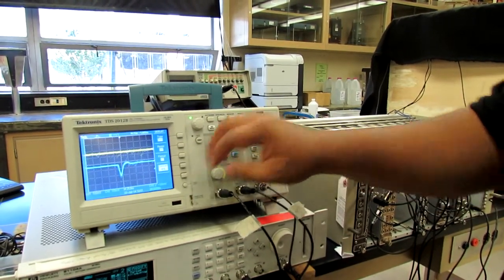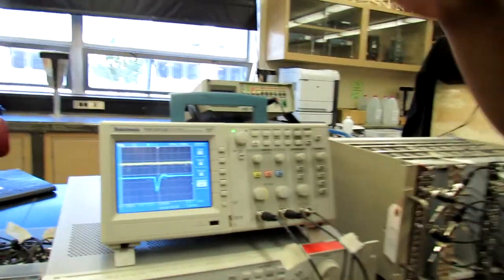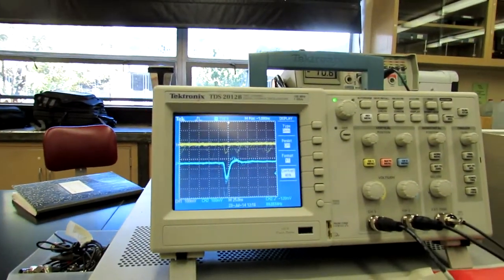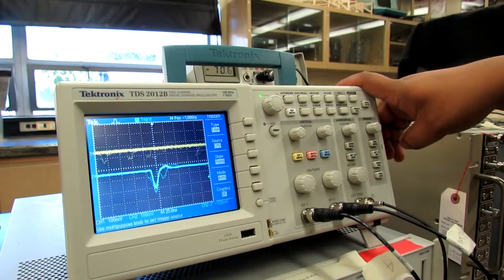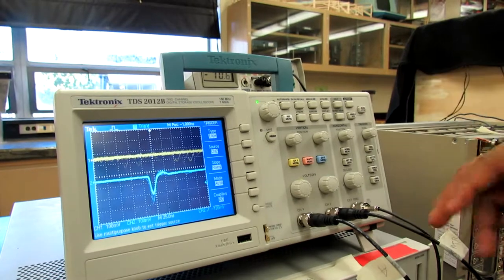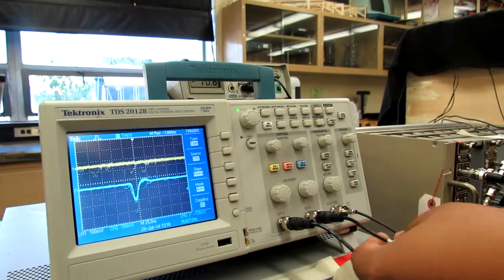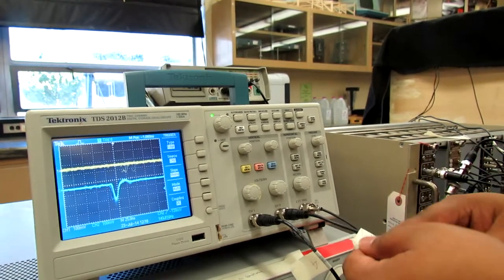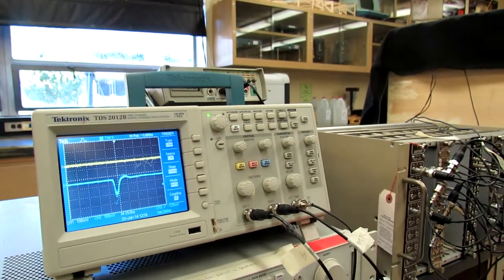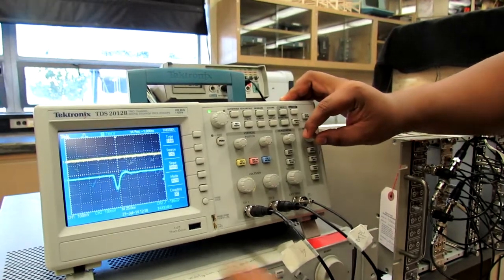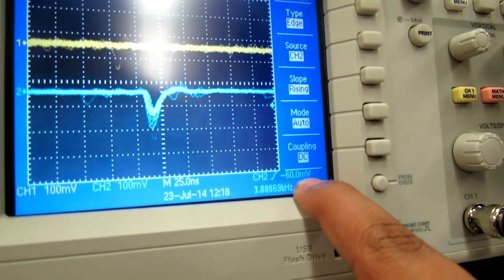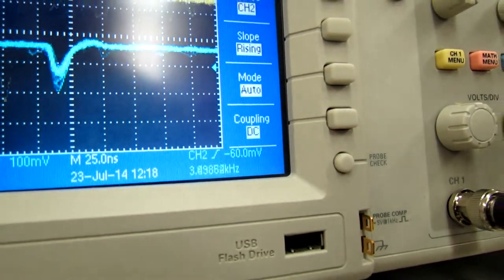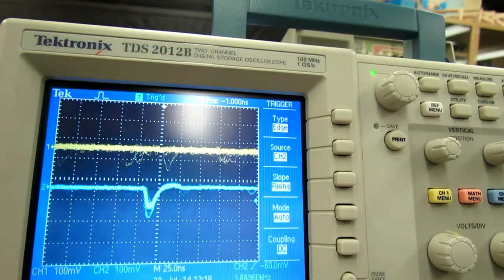So our signals occur at around 100 millivolts in wavelength. So we want to use that as our scale. And since these are the raw signals, we want to check that they are triggering at the discrimination level that we set them on. So since the ceramic one we set at 60, we should be able to set the trigger to negative 60. And that is the waves that should be going through the discriminator into the logic gate.